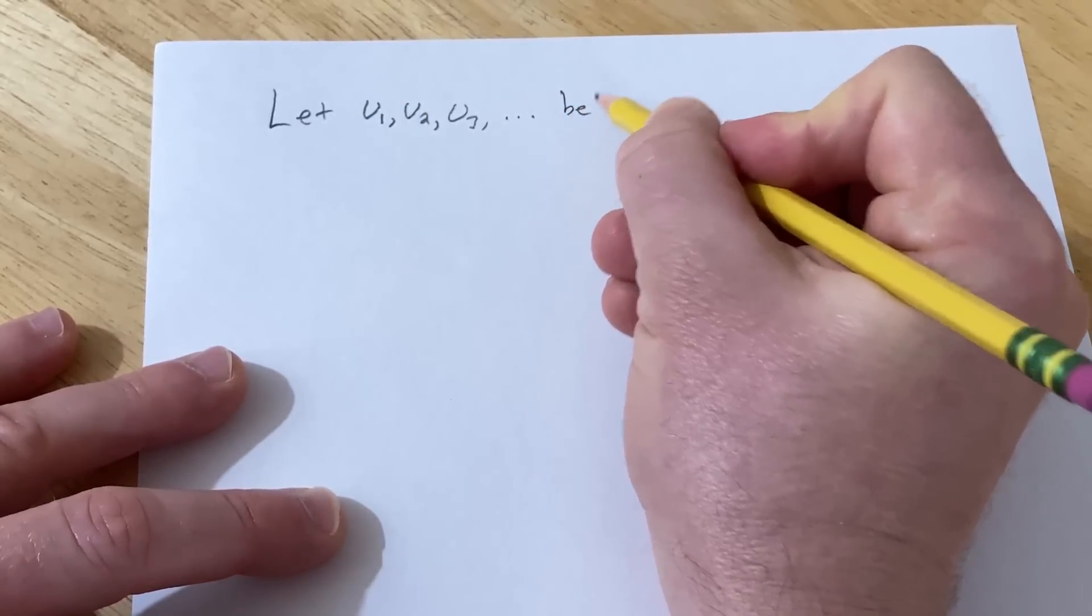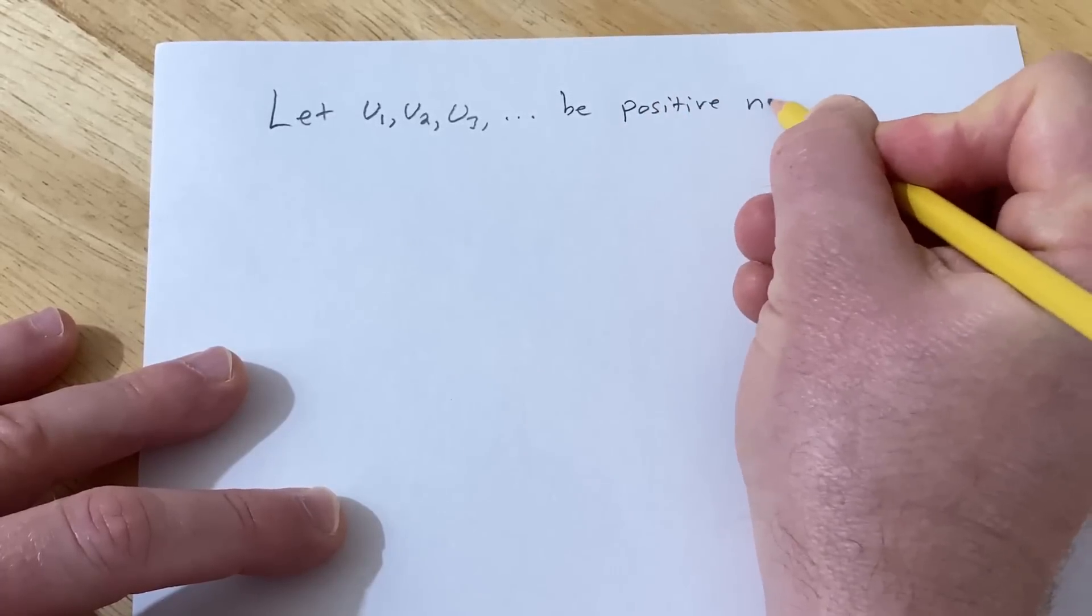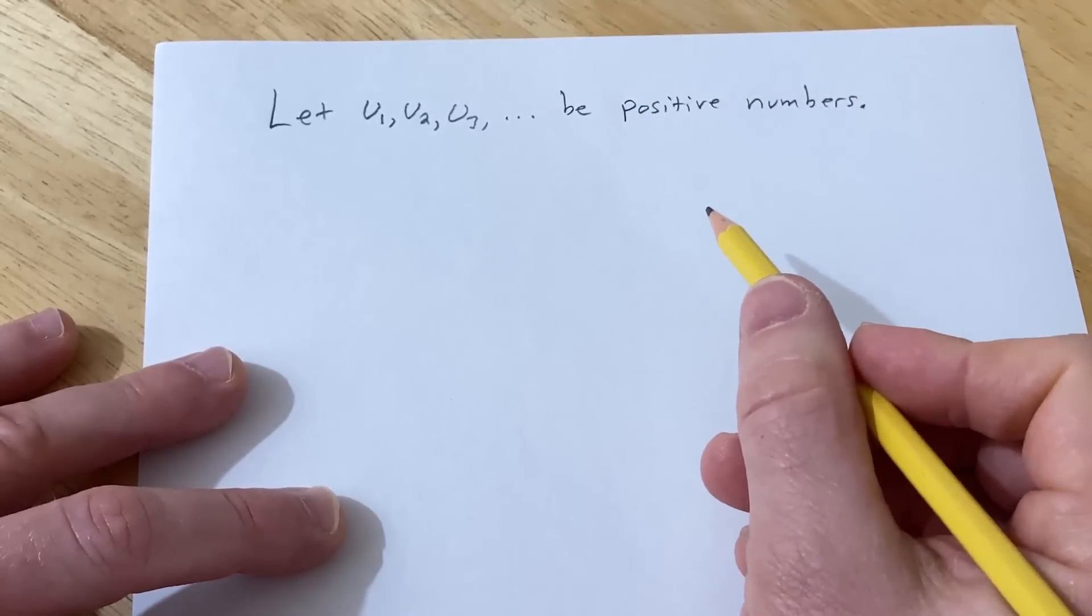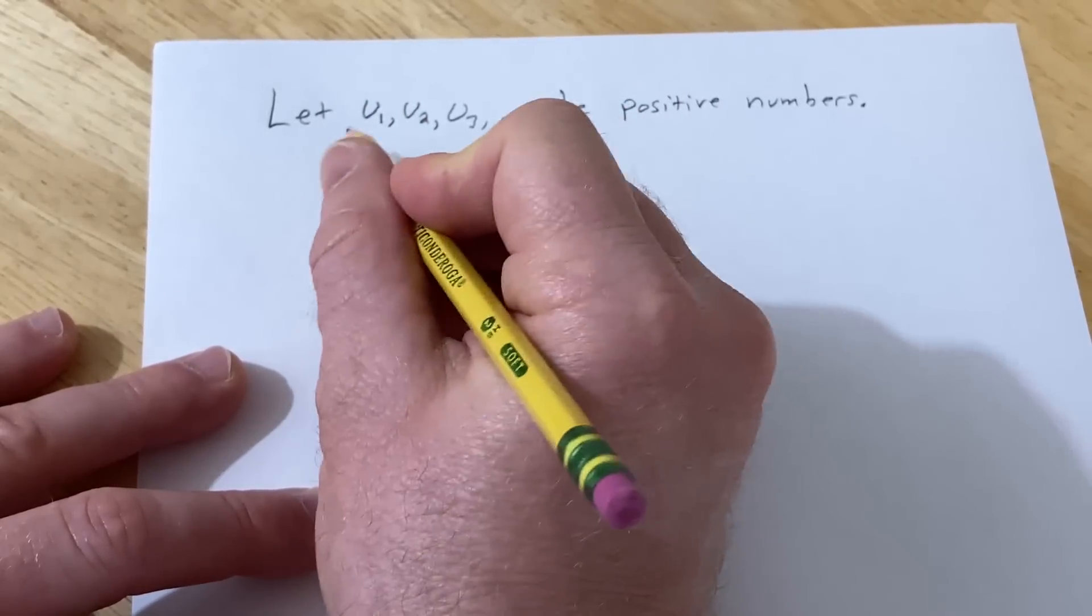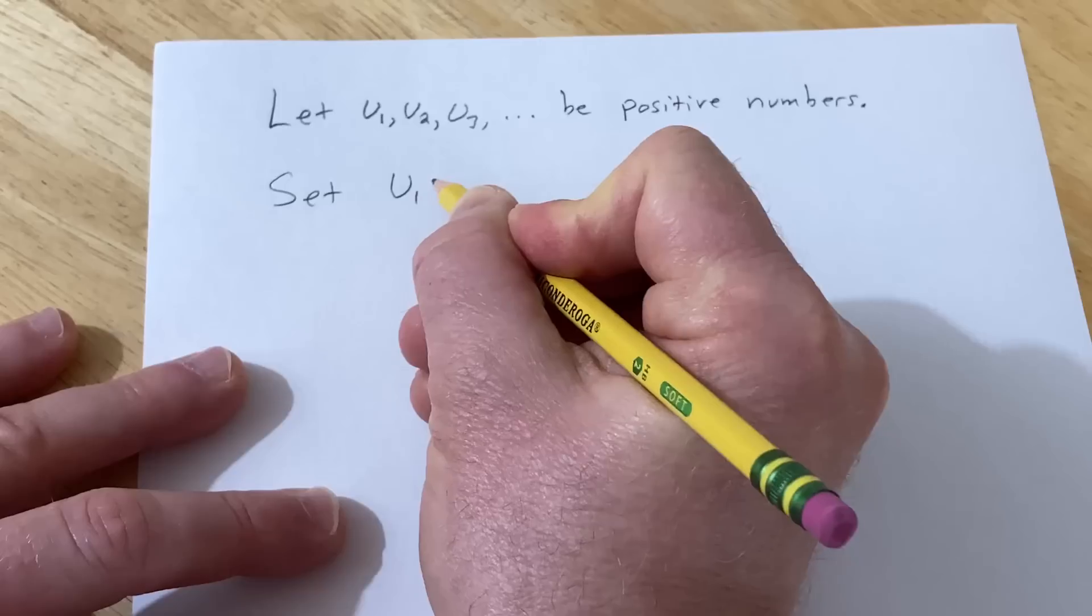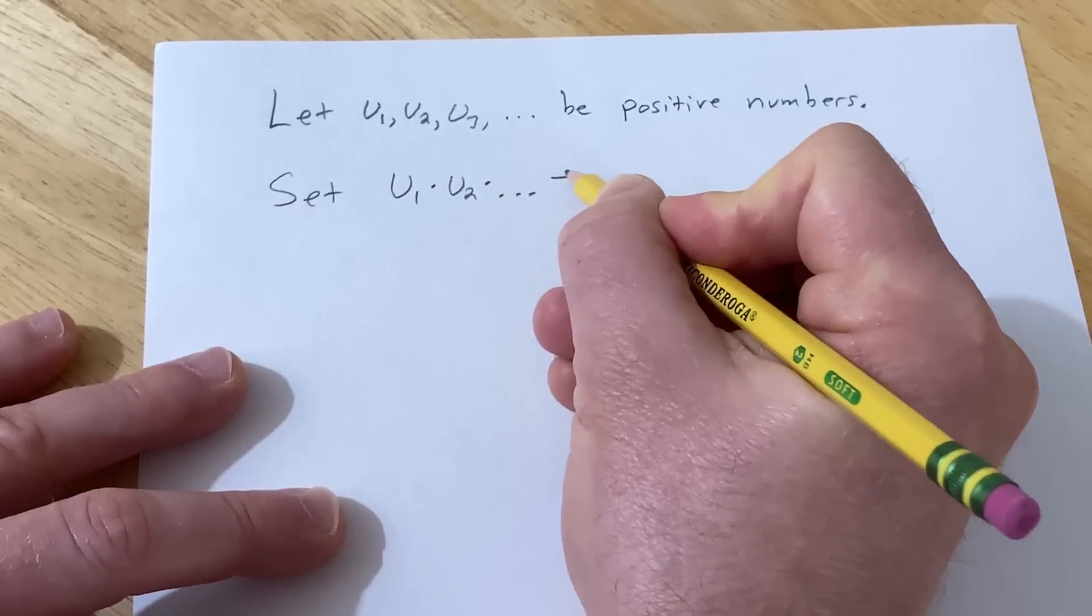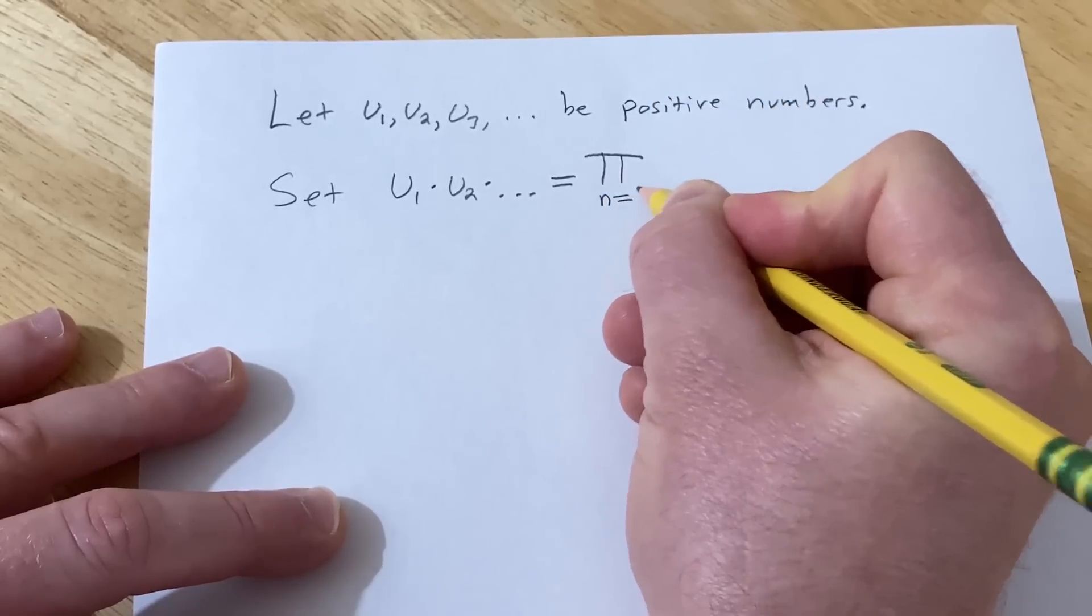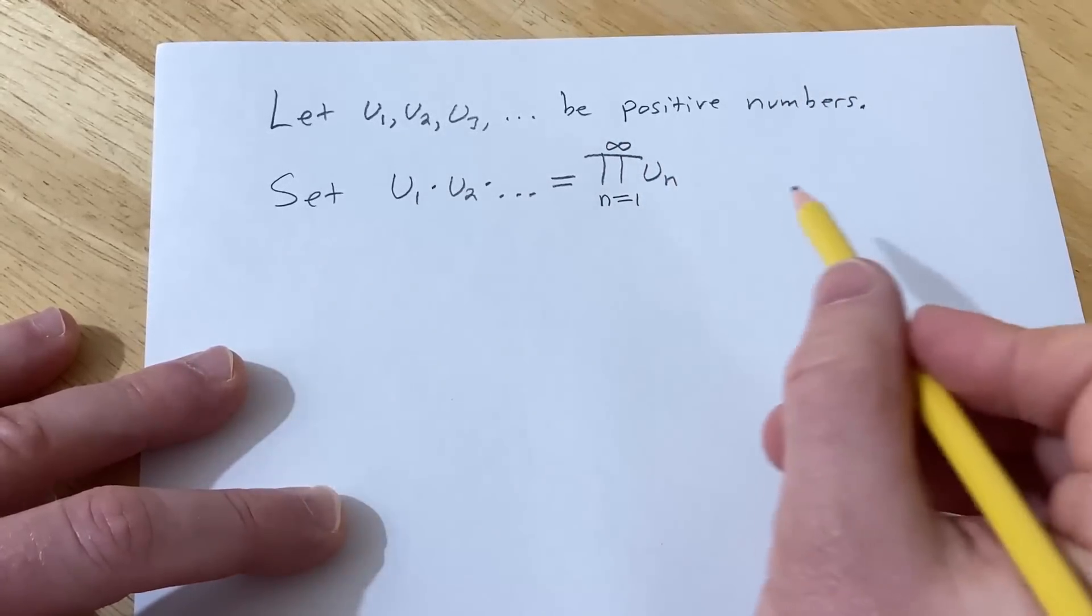I'm gonna say let them be positive numbers. So we're restricting our infinite products to products of positive numbers. Not every textbook does it that way. This is just the way that it's done in this particular book. Then we're basically going to take all of these numbers and multiply them. So we're gonna set u₁ times u₂ times dot dot dot equal to π and this product is going to run from 1 to infinity u_n. So this is an infinite product.